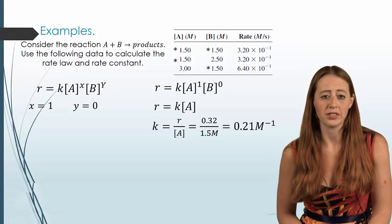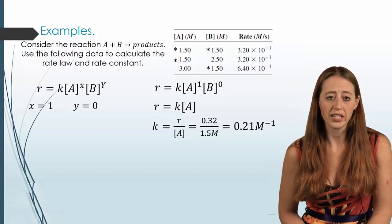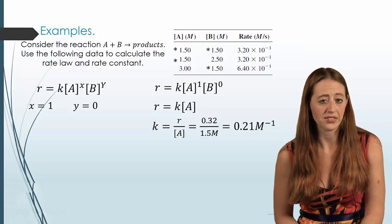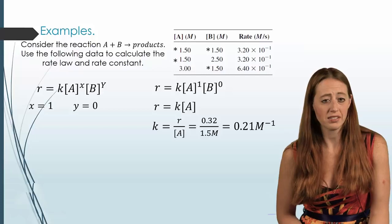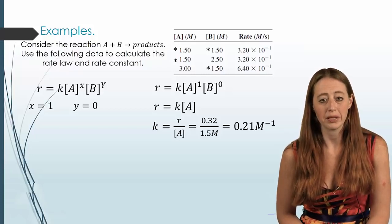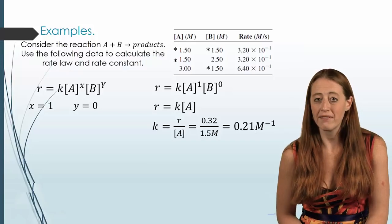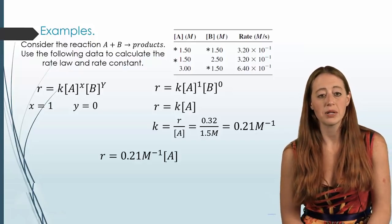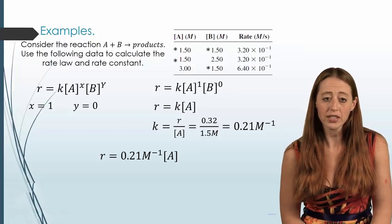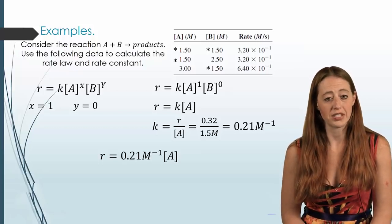And so in this case, I picked the first one. And so we can go ahead and plug in our rate over top of our concentration. And then you can see that this also gives us our units right in there as well. And we get our number. Once we have that number, we can plug that back into the rate law for K to write out our final rate law of R equals 0.21 inverse molar concentration of A.